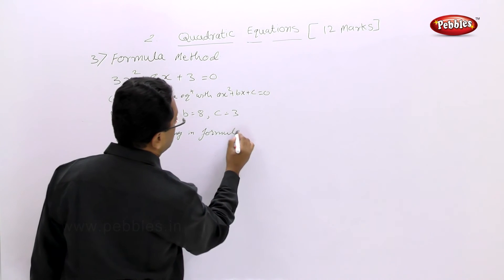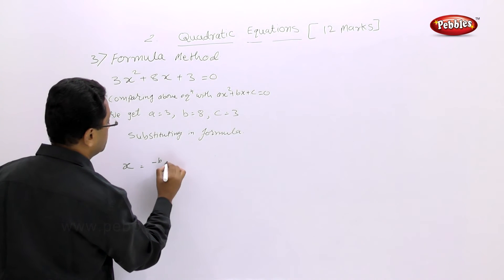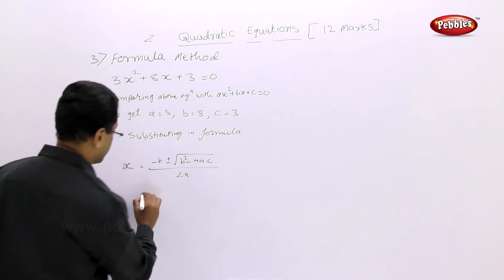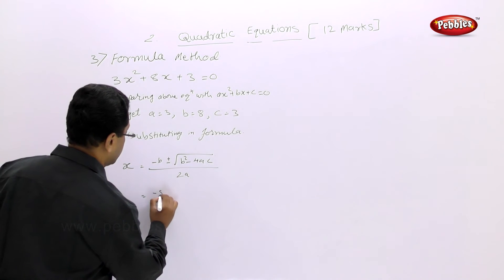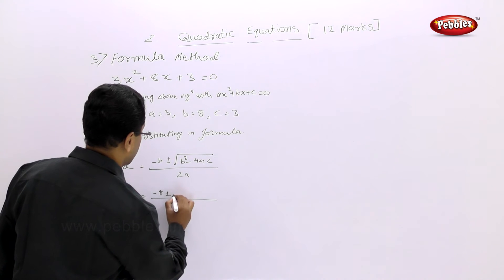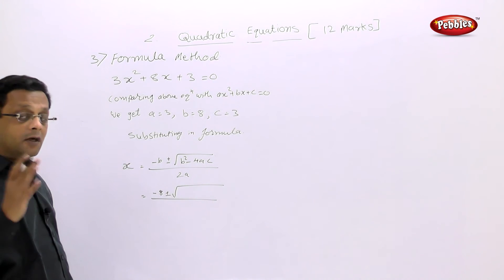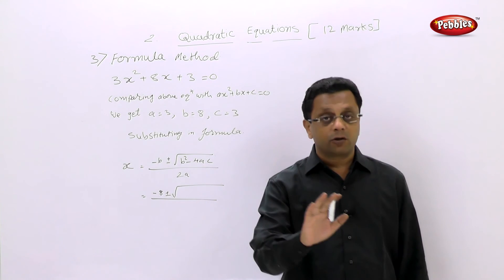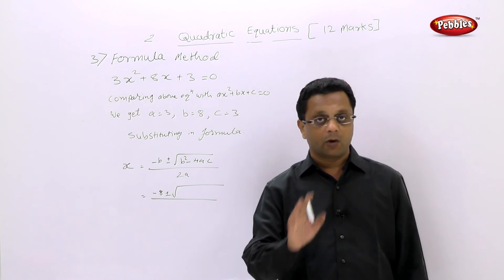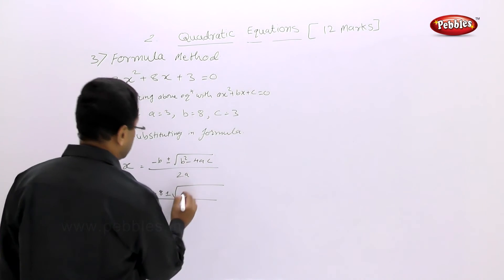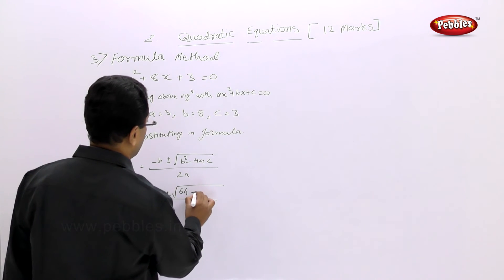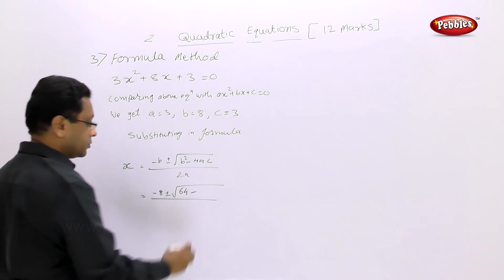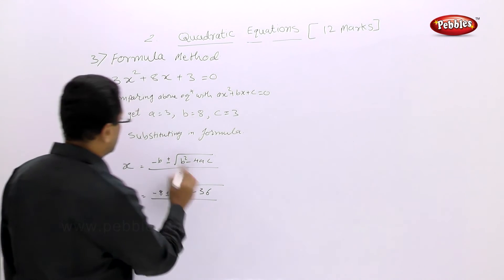Comparing with ax² + bx + c = 0, we get a = 3, b = 8, and c = 3. Substituting in the formula: x = (−8 ± √(8² − 4×3×3)) / (2×3) = (−8 ± √(64 − 36)) / 6 = (−8 ± √28) / 6.